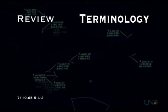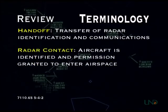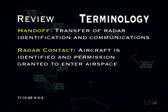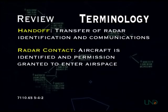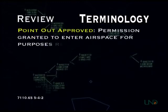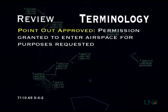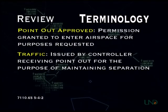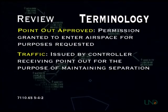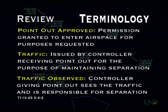Now for a quick review. There are six terms associated with the transfer of radar identification. Handoff, which is a transfer of radar identification and radio communications. Radar contact, which means the receiving controller has identified the aircraft and granted permission for it to enter his or her airspace. Point out, which is a transfer of radar identification but not radio communications. Point out approved, which is permission from the receiving controller to enter his or her airspace for the purpose requested in the point out. Traffic, which is issued by the controller receiving the point out for the purpose of maintaining separation. Traffic observed, which indicates the transferring controller sees the traffic and is now responsible for maintaining separation between that traffic and the aircraft entering the receiving controller's airspace.